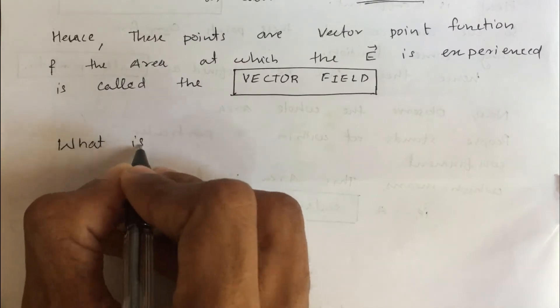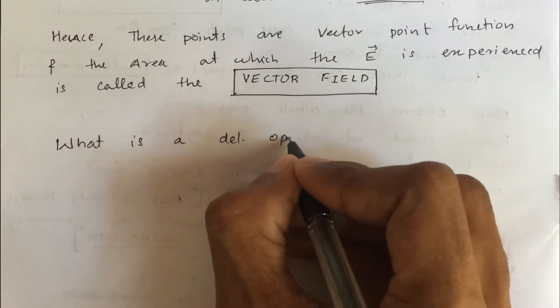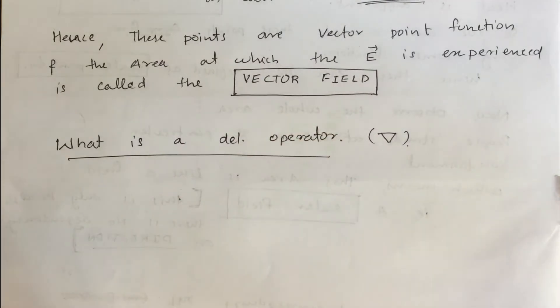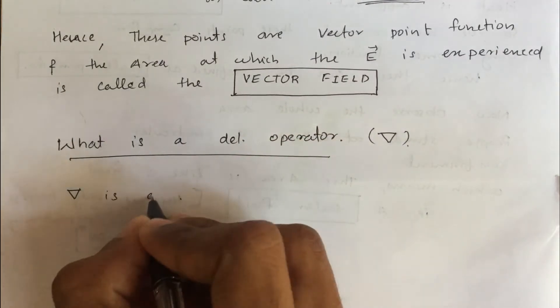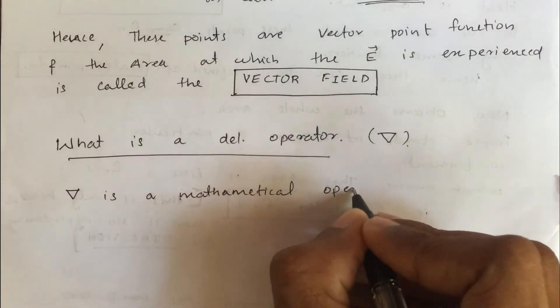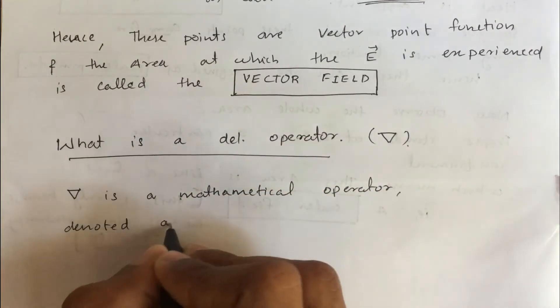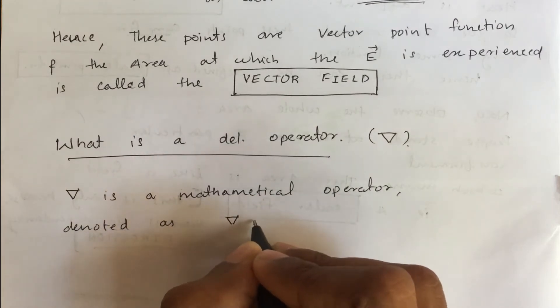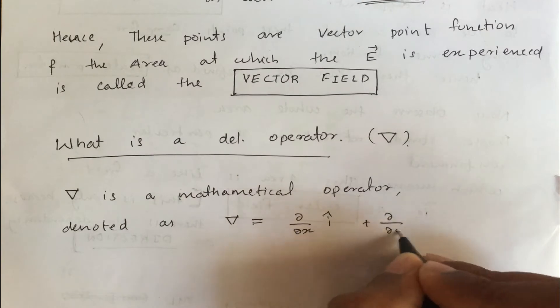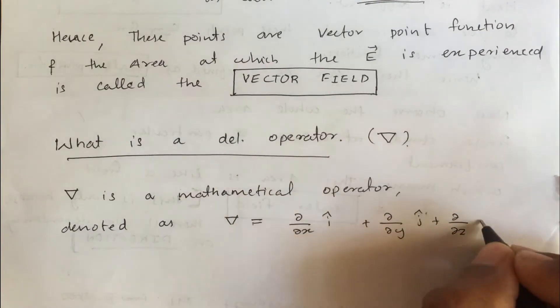Now, what is a del operator, which is denoted by upside down triangle? Del is a mathematical operator. It is defined as partial derivative by partial x i cap plus partial derivative by partial y j cap plus partial derivative by partial z k cap.